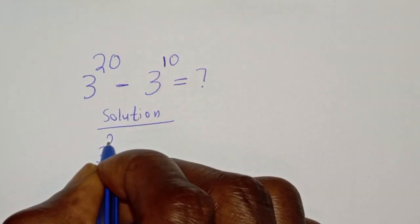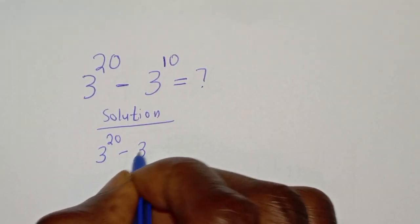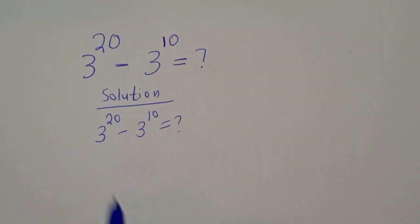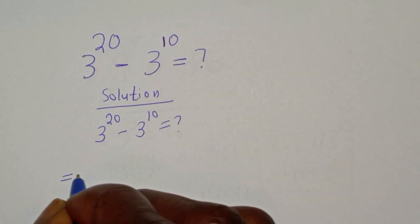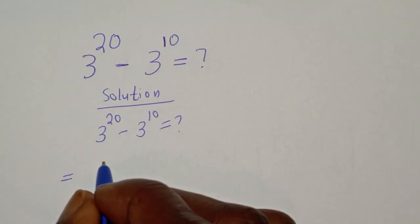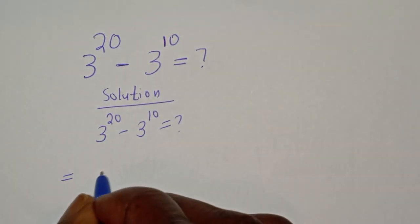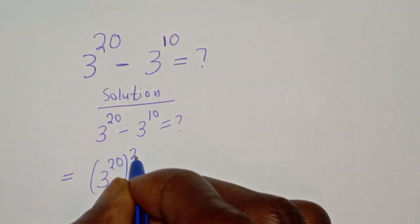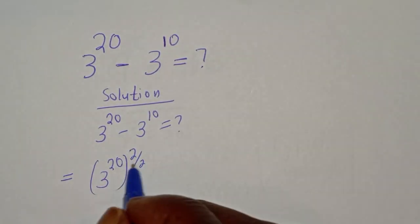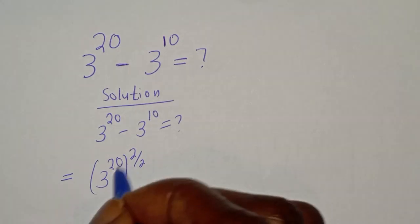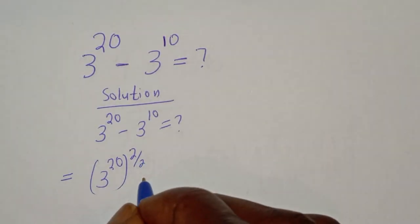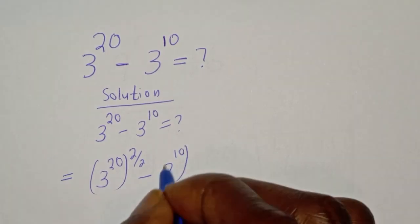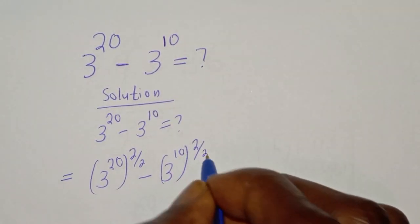t raised to power 20 minus t raised to power 10 is unknown. This is equal to t raised to power 20, which can be written as t raised to power 20 to the power of 2 over 2. This does not really change the problem because 2 divided by 2 is 1, minus t raised to power 10 over 2, over 2.